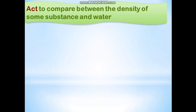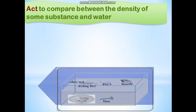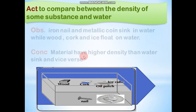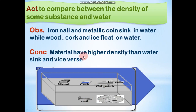Activity to compare between the density of some substances and water. If you put some substances — like wood, cork, oil patch, ice cube, iron nail, coin — in water, what will you observe? You will observe that wood, cork, oil patch, and ice cube float, and iron nail and coin sink.